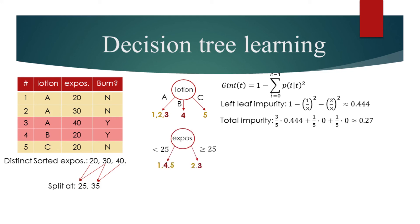If we split at 25, we will get a total impurity of approximately 0.47. If we split at 35, we get a total impurity of about 0.3.